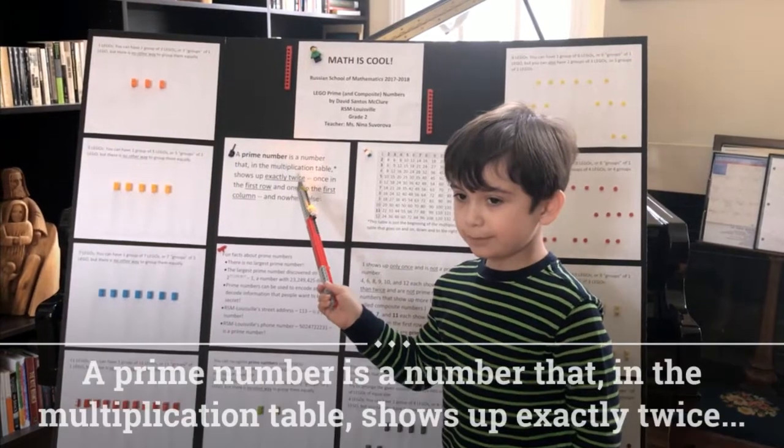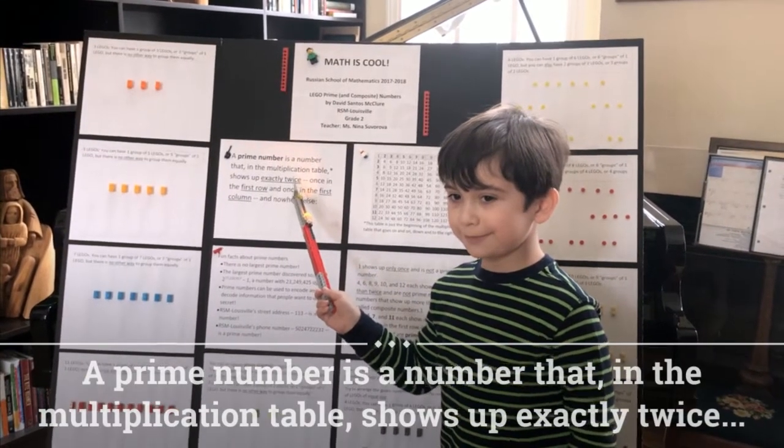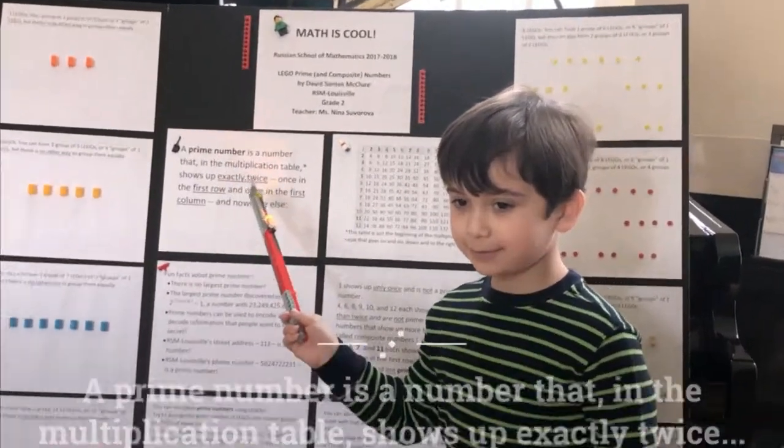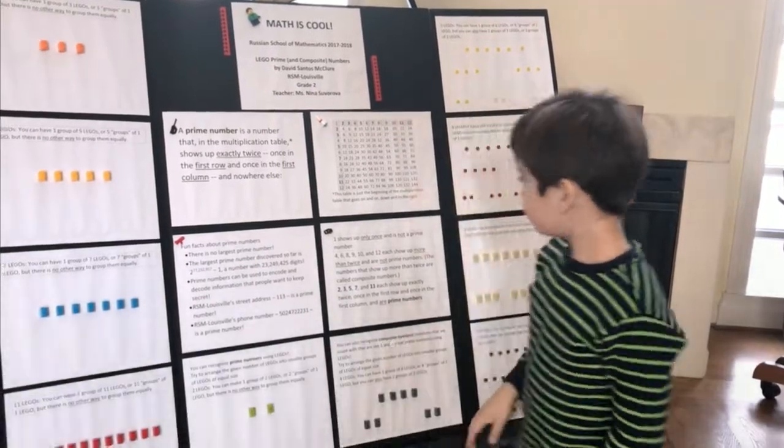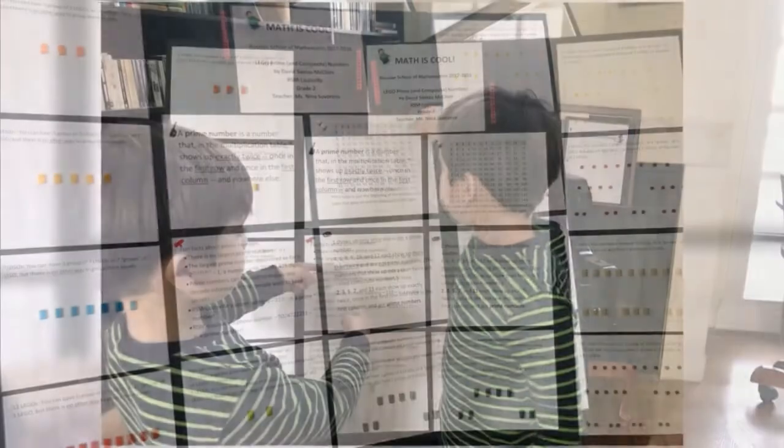A prime number is a number that in the multiplication table shows up exactly twice: once in the first row and once in the first column and nowhere else.